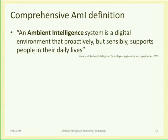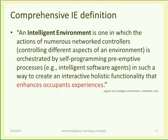Today, the best systems are those that try to give suggestions: 'Do you want me to switch the light on? Yes or no?' They can proactively suggest but not act, to be more sensible. Another definition calls it 'intelligent environment' — one in which the action of numerous networked controllers is orchestrated by self-programming pre-emptive processes to create an interactive holistic functionality that enhances occupancy experience. I would summarize it: a lot of technical stuff to enhance occupancy experience. That should be our focus — the goal should be clear.